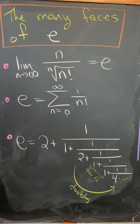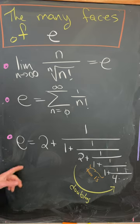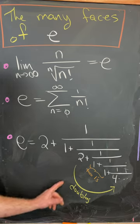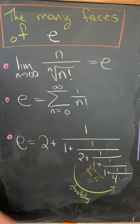It also has this very nice continued fraction representation. Notice that we've got all of the even numbers, and between the even numbers in this continued fraction there are two 1's.